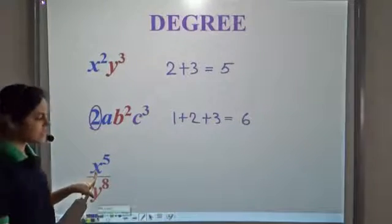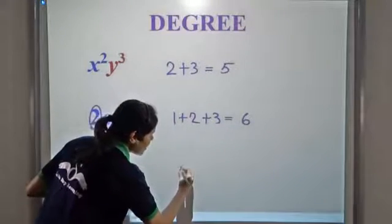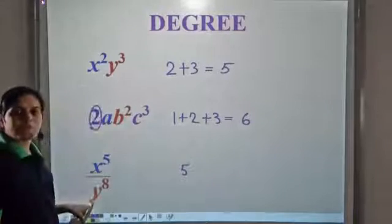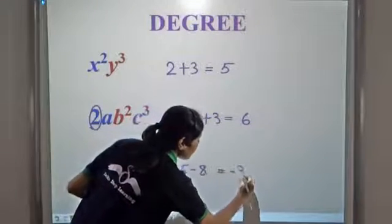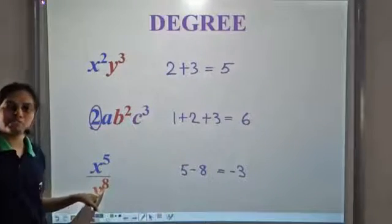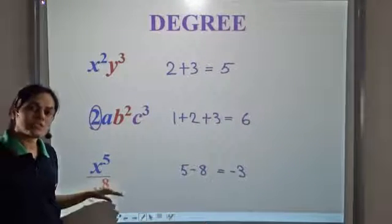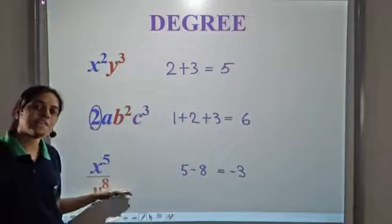So the power of x is 5, and we need to subtract the power of y from this, which is 8. So the degree of this term is negative 3. So degree of a term can also have a negative value.